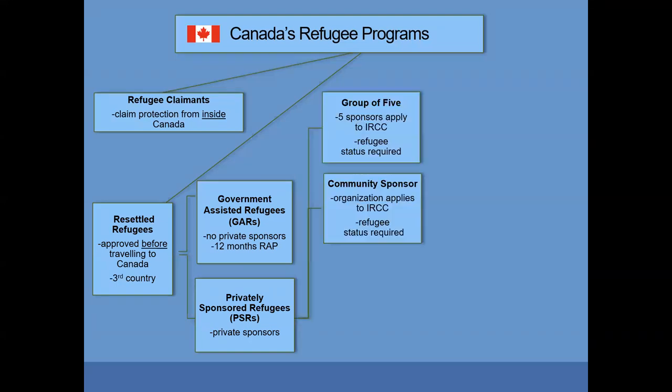You may have heard of a Group of Five or Community Sponsor application. This is where a group of five individuals or an organization make an application directly to IRCC — Immigration, Refugees, and Citizenship Canada.